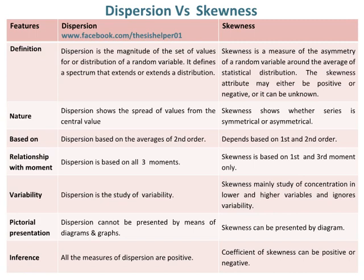Dispersion is a study of variability, whereas skewness is mainly a study of concentration in lower and higher variables and ignores variability.